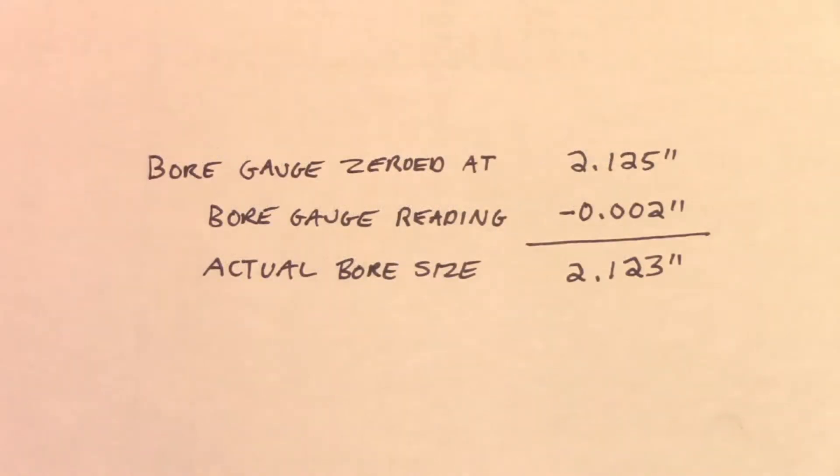For a second example, let's say our bore gauge reading was negative two thousandths of an inch. We would take our original calibrated size of 2.125 inches and subtract two thousandths of an inch to give us a true bore size of 2.123 inches.